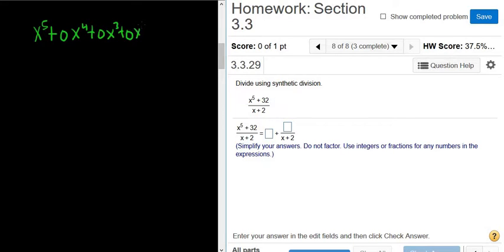plus 0x squared plus 0x plus 32. You want to think of it as having all the powers of x.